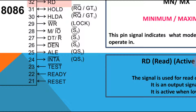The TEST pin is examined by the WAIT instruction. If the WAIT instruction is executing, the processor remains in a wait state until the TEST input pin goes low. If the TEST pin is low, the processor is in execution state; if high, the processor is in wait state.